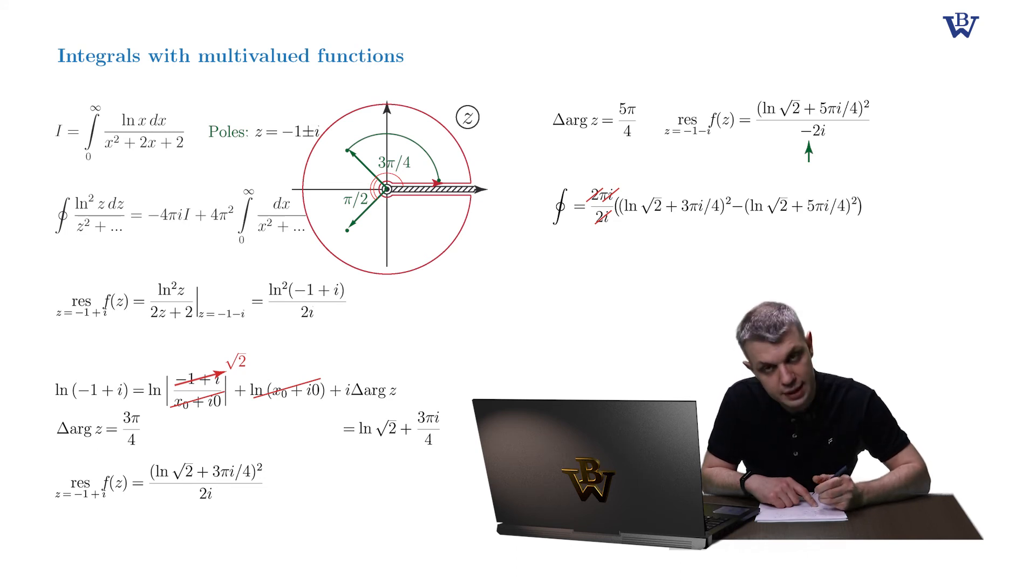So obviously it's pi i with a negative sign, log of square root of 2, and plus pi squared.